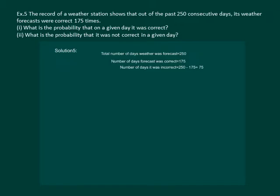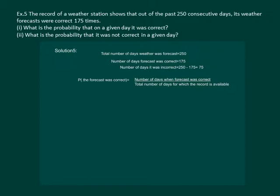We are given that the total number of days the weather was forecasted is 250, the number of days the forecast was correct is 175, and the number of days the forecast was incorrect will be 250 minus 175, which comes out to be 75. The probability that the forecast was correct is given by the ratio: number of days when the forecast was correct by total number of days for which the record is available, which comes out to be 175 by 250, equal to 0.7.